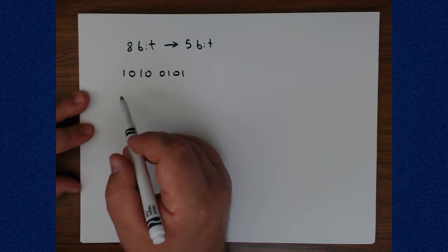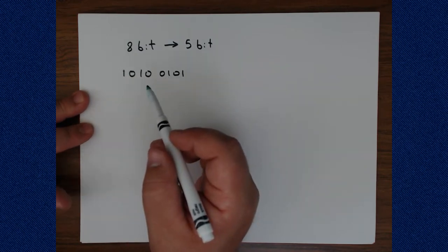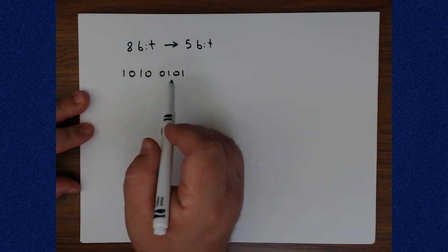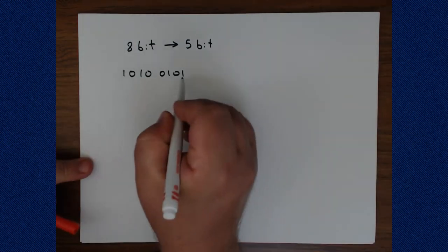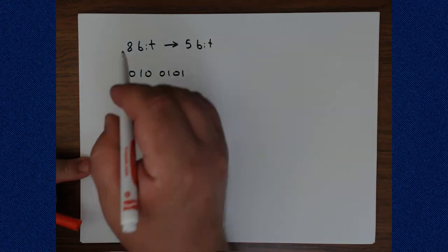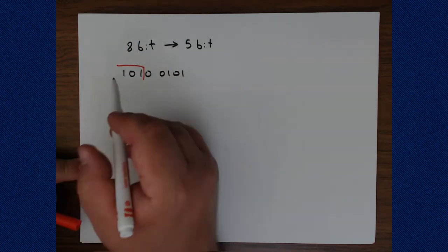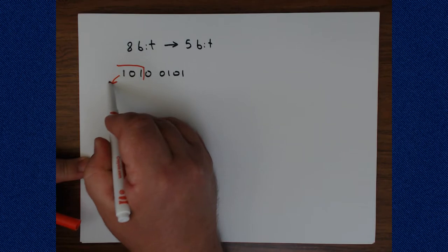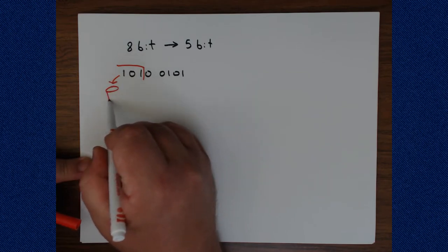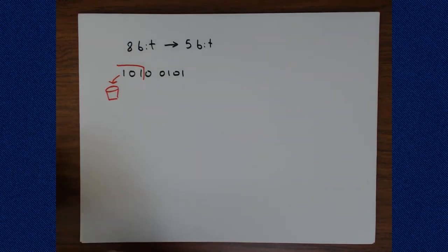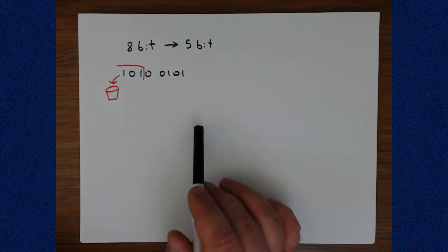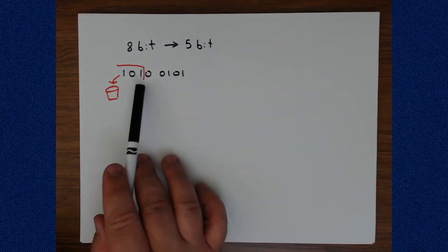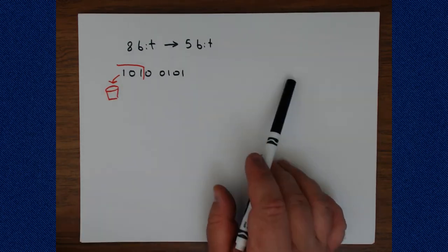What's going to happen when we go to 5-bits is we're just going to lose all the bits that are too high. So we're going to keep one, two, three, four, five bits. And these top three bits here are just going to end up in the bit bucket. Now this is true whether we are looking at a signed representation or an unsigned representation. It will not matter. If we're going smaller, we're just going to truncate and lose the high order bits.